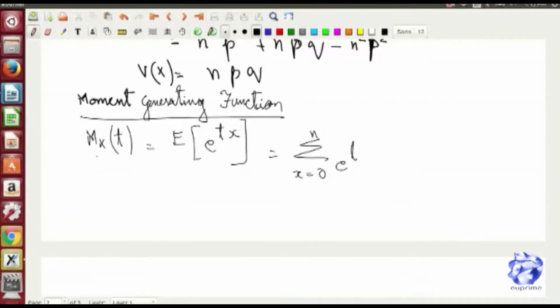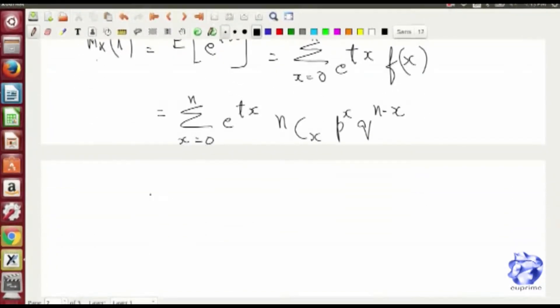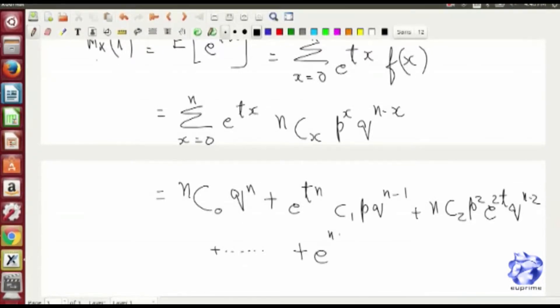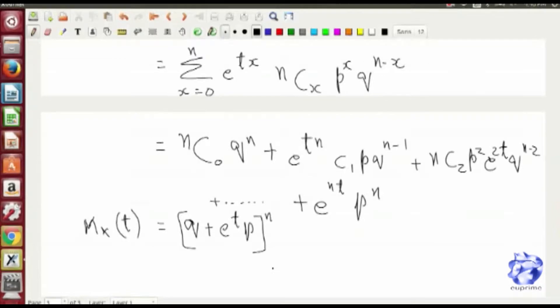Now we follow the same method that we did last time. We find the mean and variance through moment generating function. The moment generating function evaluates out to be (q plus e to the power of t times p) to the power of n.